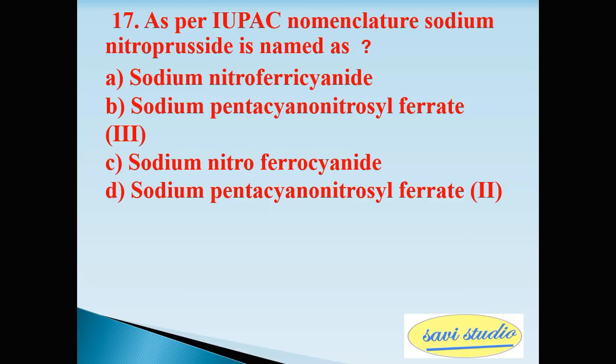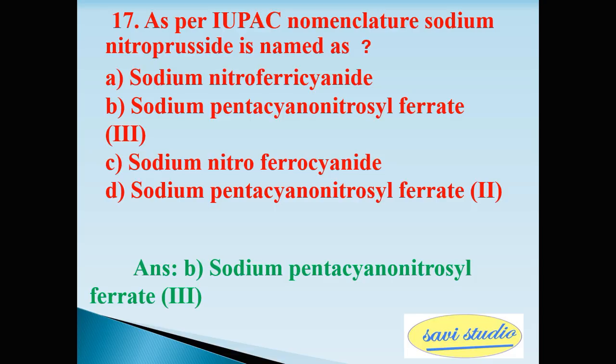Seventeenth question: as per IUPAC nomenclature, sodium nitroprusside is named as A: sodium nitroferricyanide, Option B: sodium pentacyanonitrosyl ferrate(III), C: sodium nitroferricyanide, Option D: sodium pentacyanonitrosyl ferrate(II). The right answer is B: sodium pentacyanonitrosyl ferrate(III).